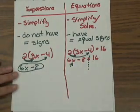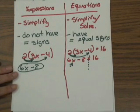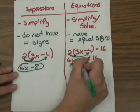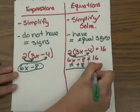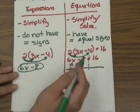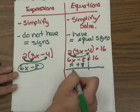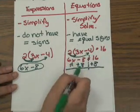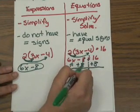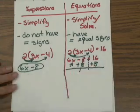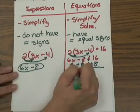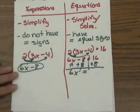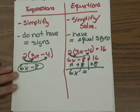We also want to get rid of the positive 6, but the first number to remove is the one furthest away from x, which is negative 8. The only way to cancel negative 8 is to perform the opposite operation — adding 8. Whatever you do to one side of the equal sign, you must do to the other side. So I add 8 to both sides, bring down 6x and the equal sign, and 16 plus 8 gives me 24.